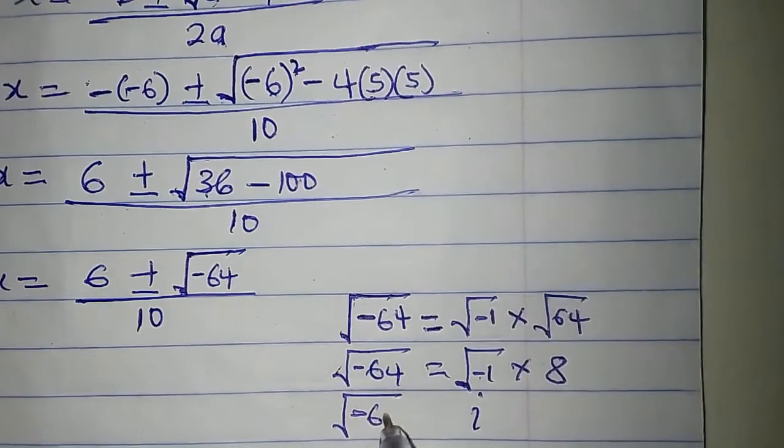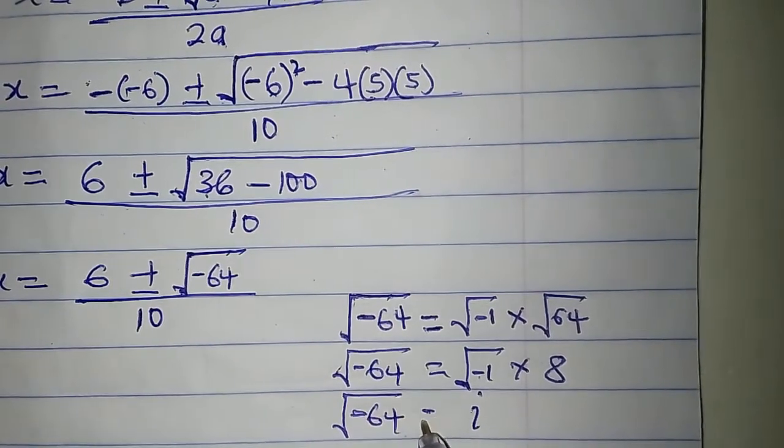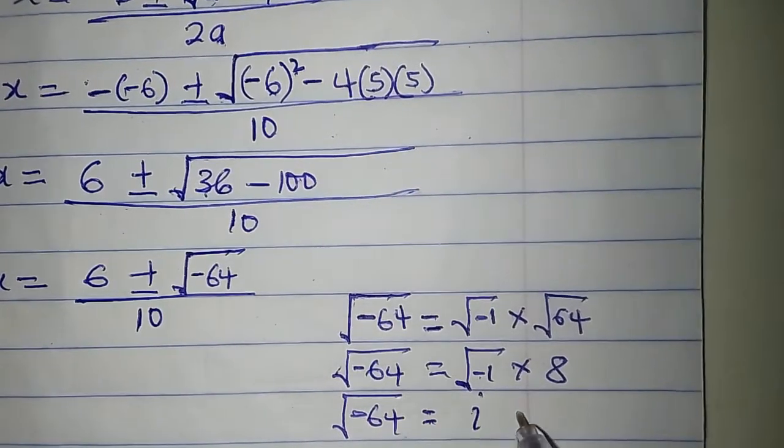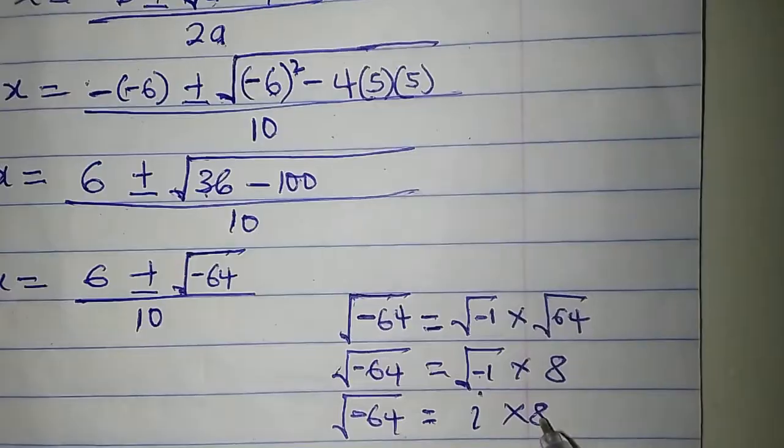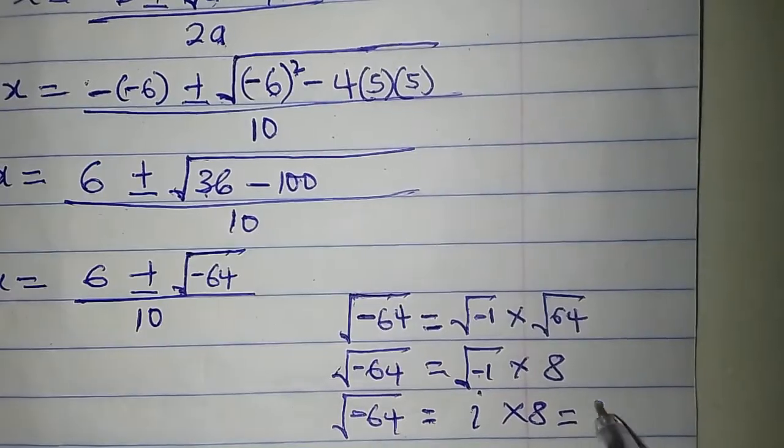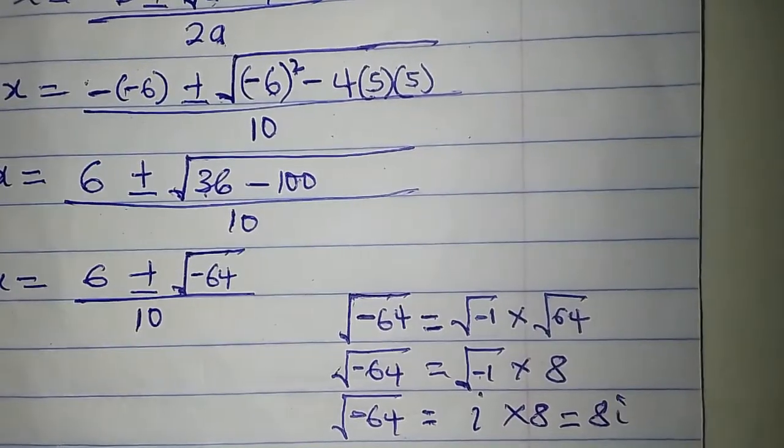...we have the square root of minus 64 equal to i times 8, which is equal to 8i.